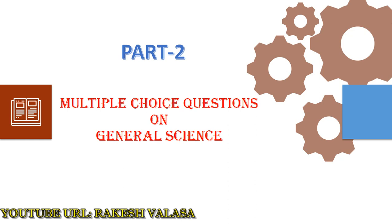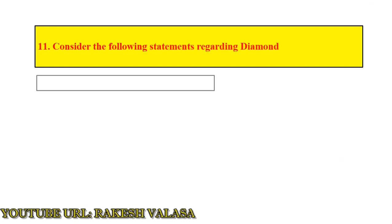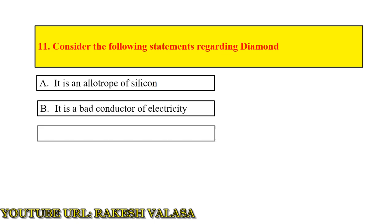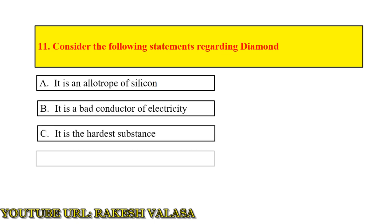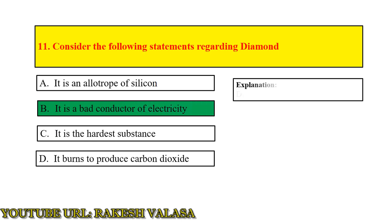Multiple-choice questions on general science, Part 2. Question number 11: consider the following statements regarding diamond. Answer: it is a bad conductor of electricity. Explanation: diamond is an allotrope of carbon.